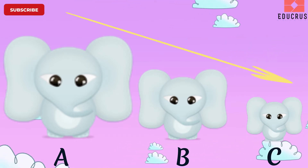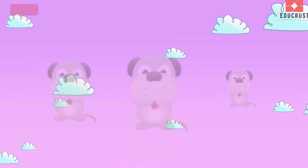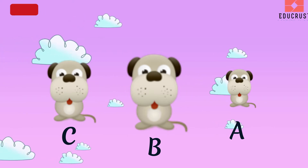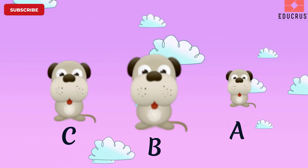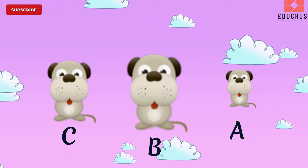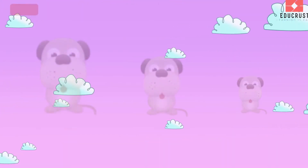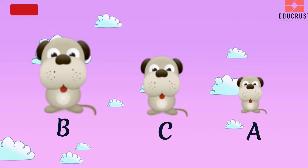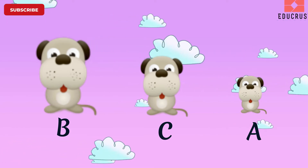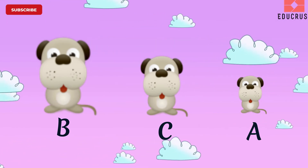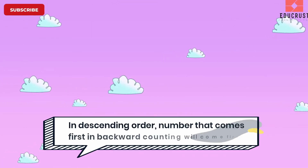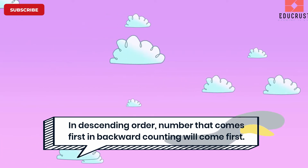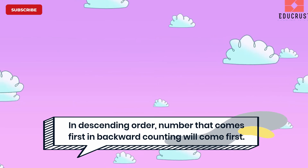Look at these dots. Can you arrange them in descending order? Yes, these are now in descending order. Please note that in descending order, numbers that come first in backward counting will always come first.